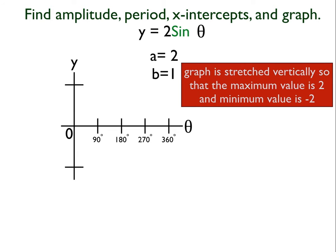My amplitude is 2. So that graph is stretched vertically so that the maximum value is 2, and the minimum value is negative 2.